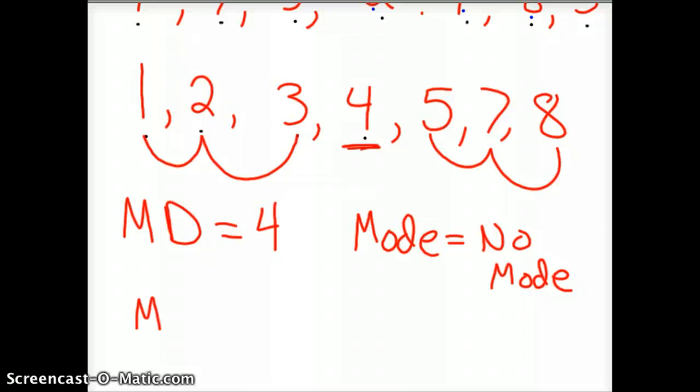And then the final thing I said I'd show you how to do is midrange, which is very easy. It's 8 plus 1 divided by 2. So that's 9 divided by 2, or 4.5. So there's your midrange, mode, and median.